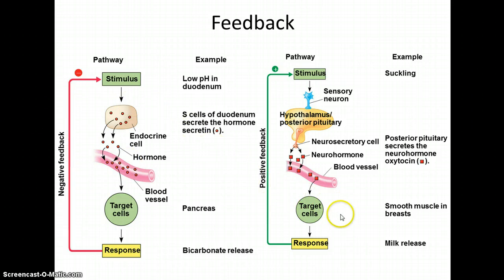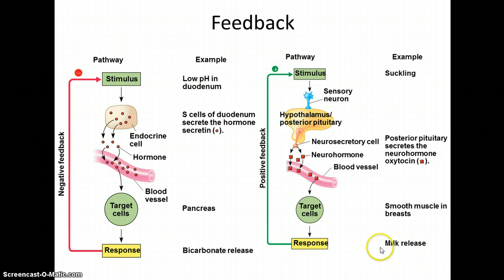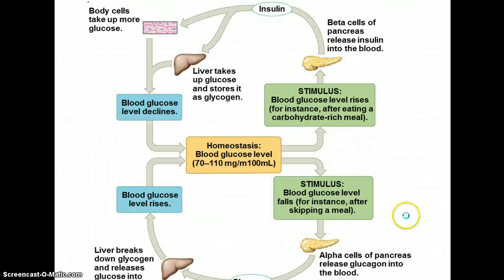Positive feedback is where the stimulus elicits some kind of response by your neurosecretory cells, hormones, or glands, and it carries out some response which has a positive feedback — causing more of this to happen, greater stimulus, more of this, in this case milk to be released and produced. So you can have both negative and positive feedback in these systems.